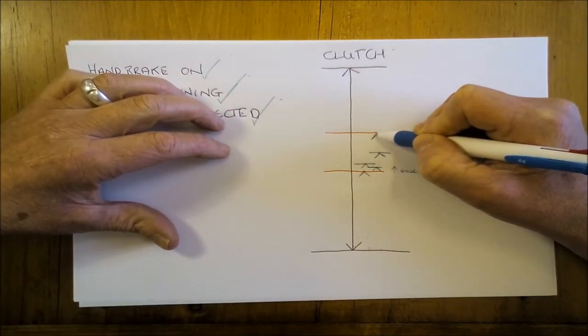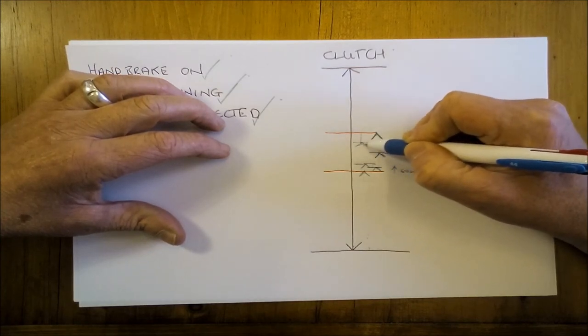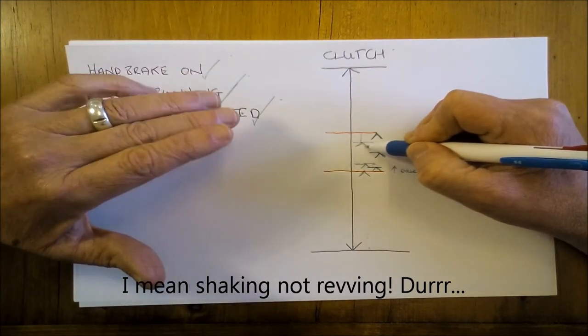So it's about you getting used to controlling your foot within this biting point. If you squeeze down more than that, all that revving and juddering starts to reduce a little bit.